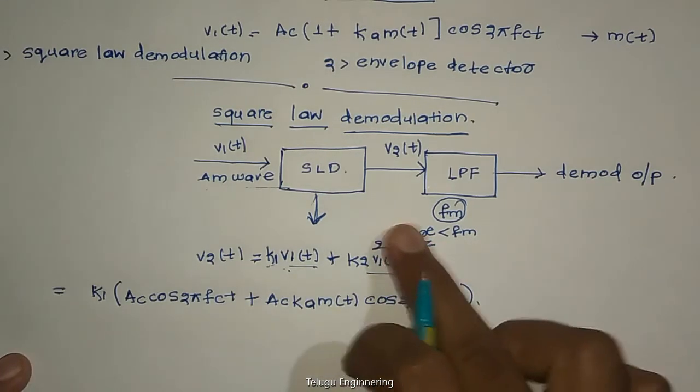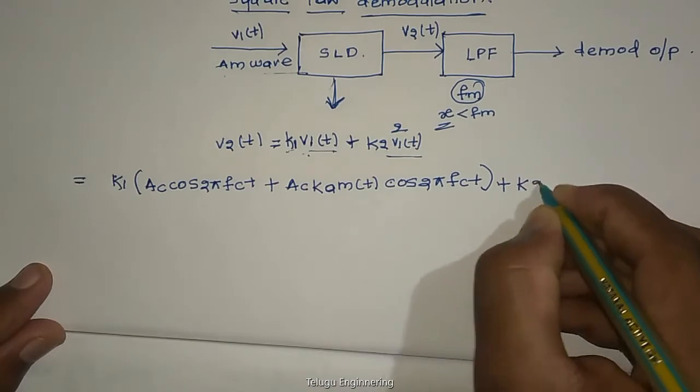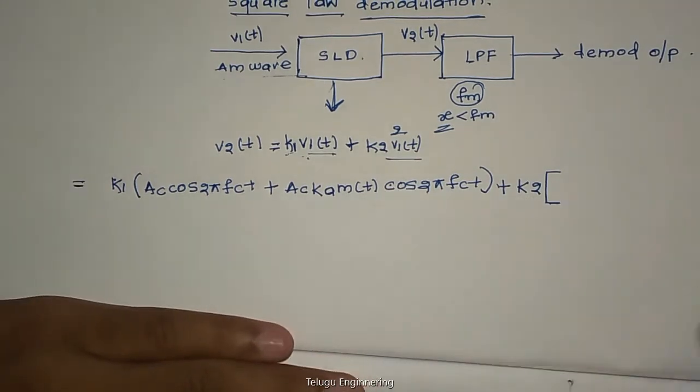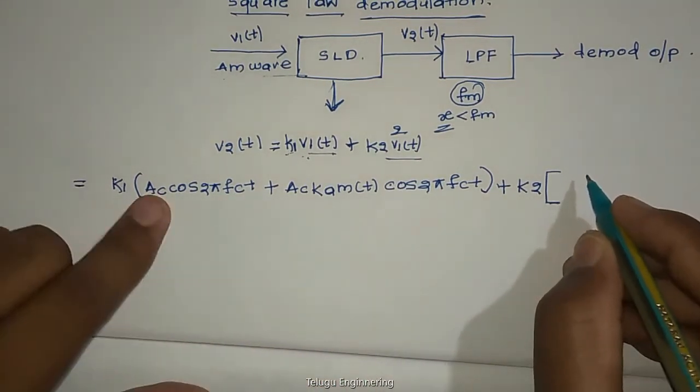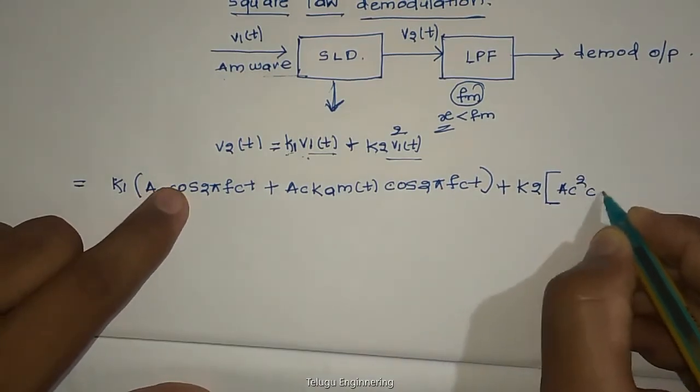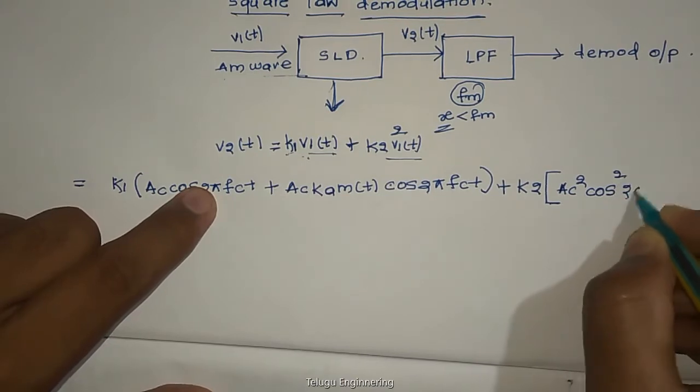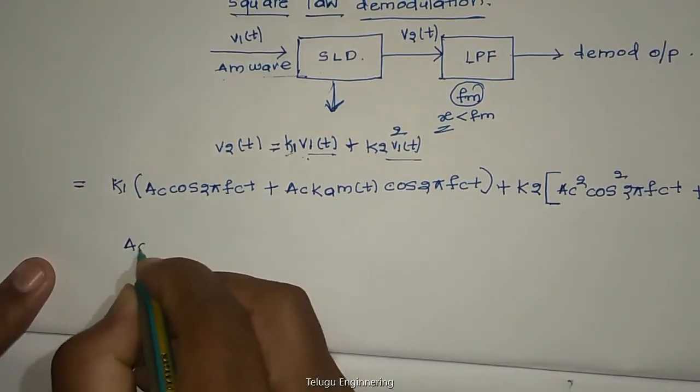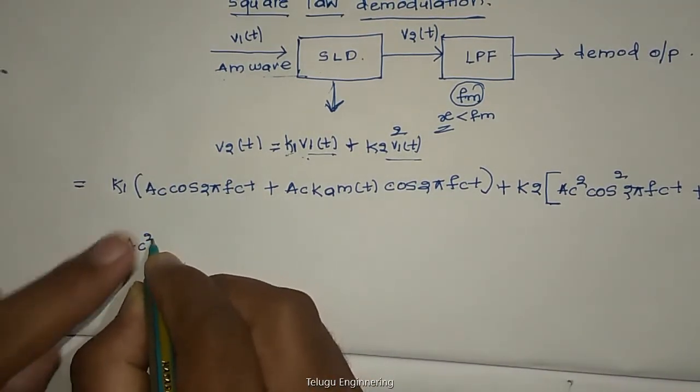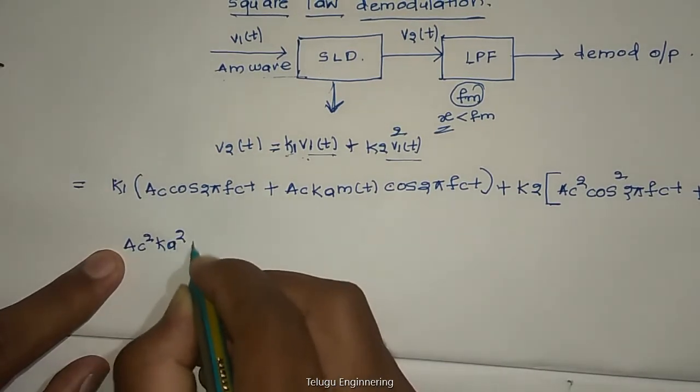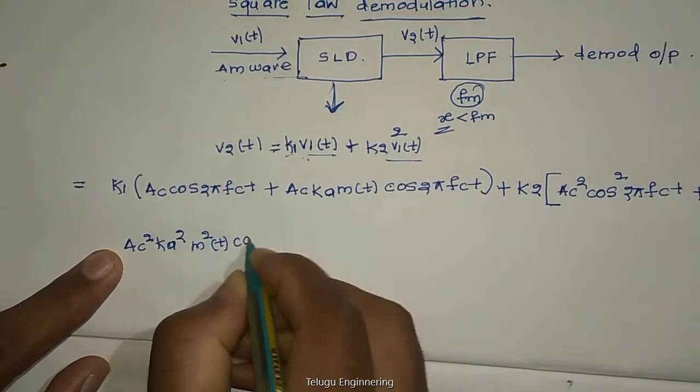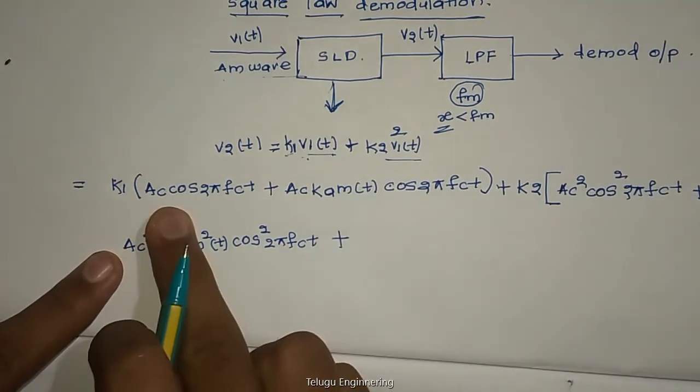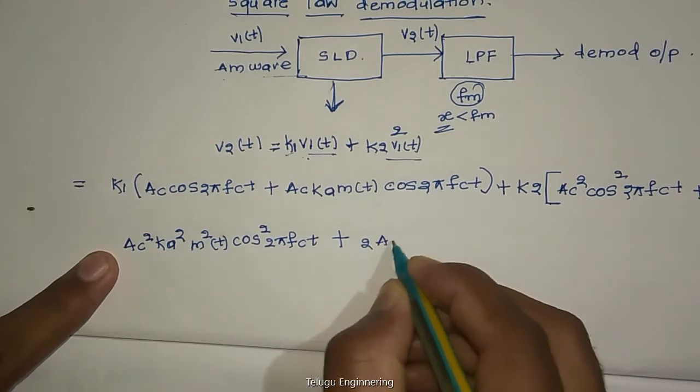K2 multiplied with squaring. So individually we take the square. First AC square cosine square 2 pi FCT, plus AC square KA square and M square of T cosine square 2 pi FCT, plus A square B square plus 2AB, so 2 AC square KA M of T cosine 2 pi FCT.